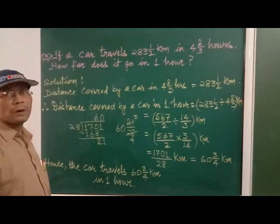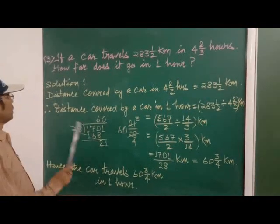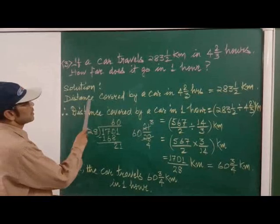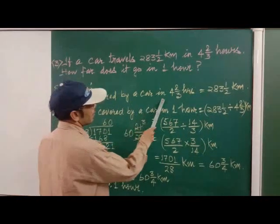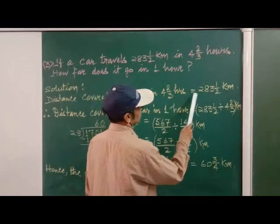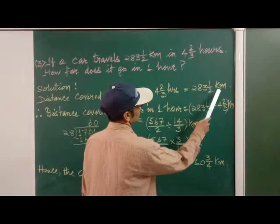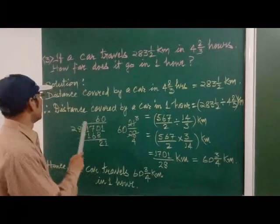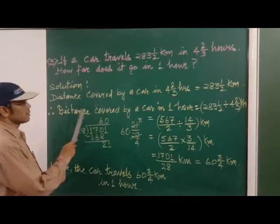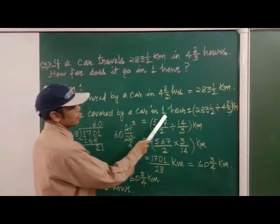So we have to find for 1 hour. So we have to write like this. Distance covered by a car in 4 2/3 hours is equal to 283 and a half kilometer. Distance covered by a car in 1 hour.